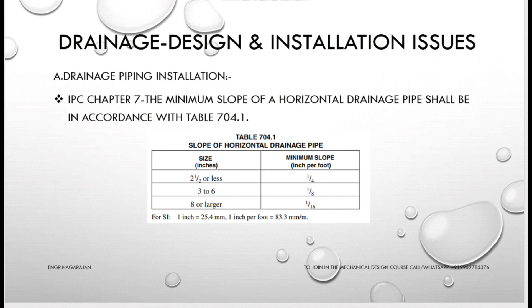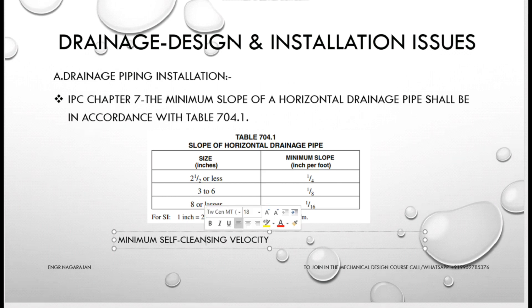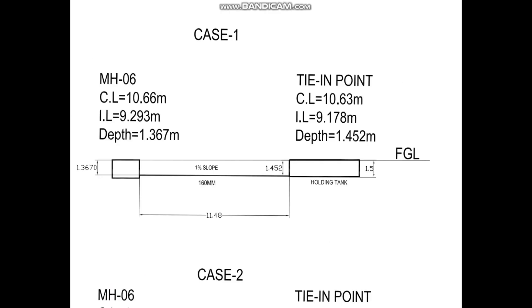Our pipe size is 160 mm, which falls in the 3 to 6 inch range, so I followed 1/8 inch per foot — that means a 1% slope for the complete installation. For large infrastructure projects, slope is determined based on minimum self-cleansing velocity, which I will explain in the pipe sizing design video. Also, an important upcoming topic: sometimes a designer sizes a holding tank for 3 days of capacity but the tank fills in one day — that is a design issue we will address in Chapter 2 on drainage piping design issues.